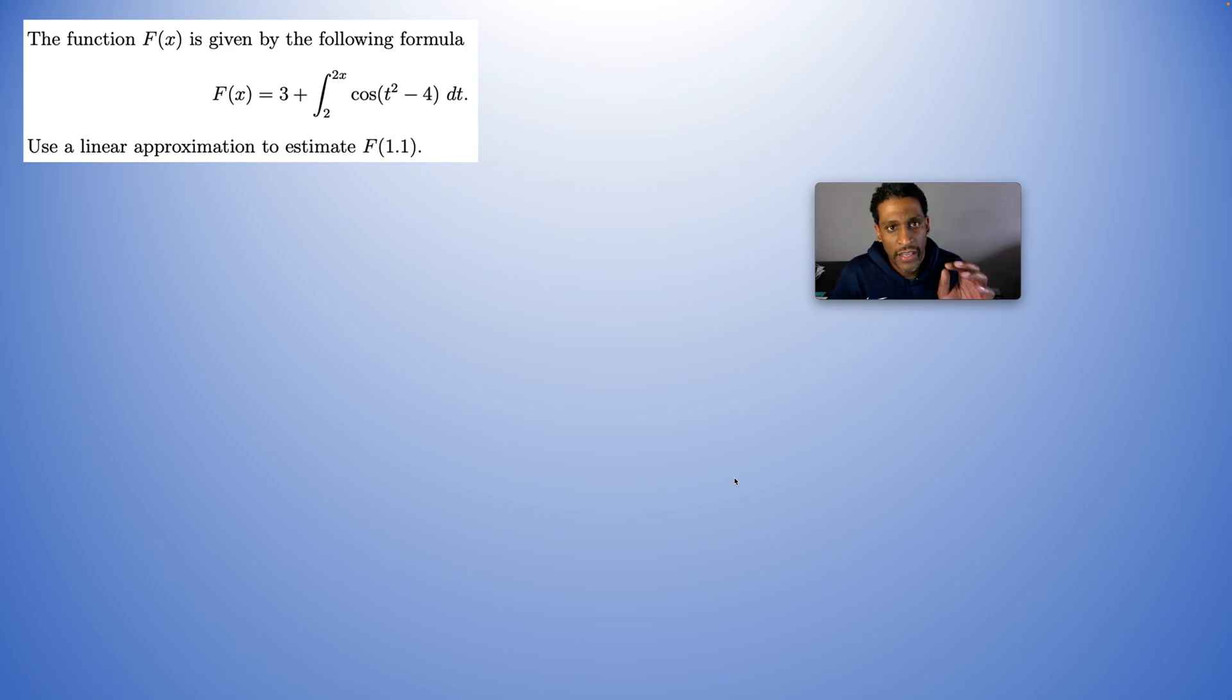Because the last part of the question says to use a linear approximation to estimate the function at 1.1. So the best way to do that is by getting the tangent line at 1.